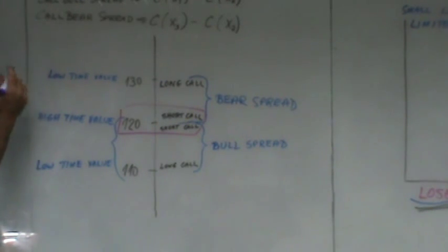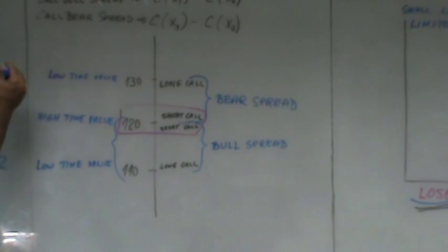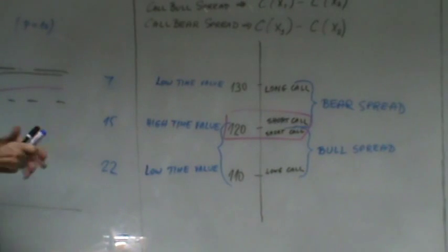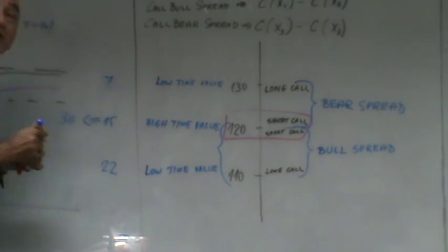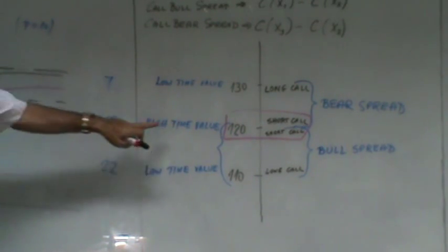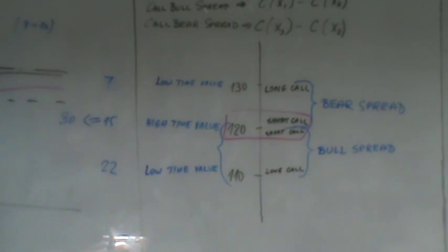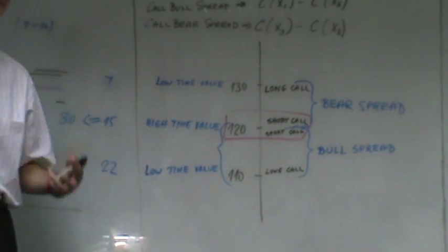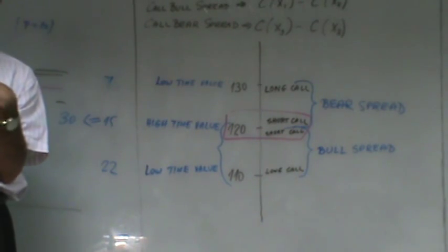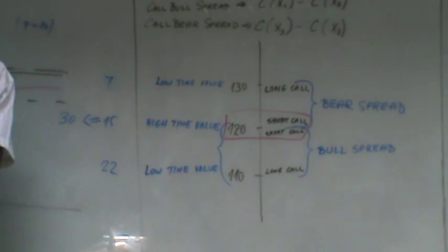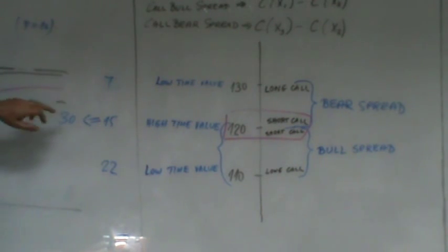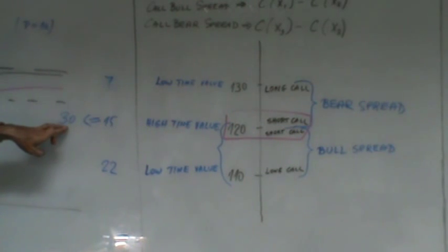Let me pick some numbers for illustration. The far out-of-the-money call costs maybe 7, the far in-the-money call costs maybe 22, and the two middle short calls each cost 15. So you're collecting 15 times 2 equals 30 on the two short calls, and paying 7 plus 22 equals 29. When you initiate the butterfly you're pocketing money. If the stock remains around the midpoint, you collect that time value of 30.